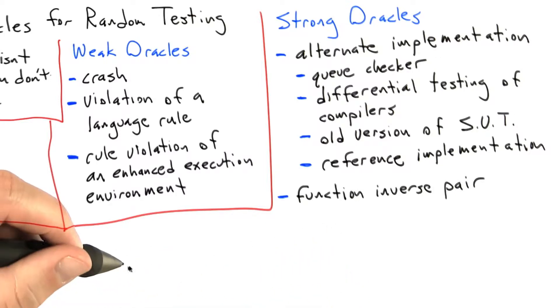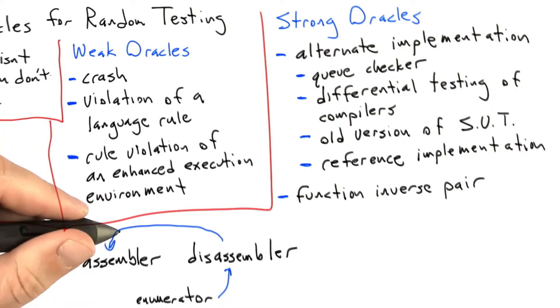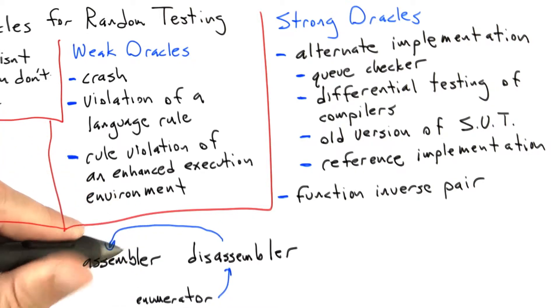If you remember a couple of units ago, I gave the example of where you could test an assembler by pairing it with a disassembler and also an exhaustive enumerator for instruction encodings. And then what we would do is take all valid instruction encodings, disassemble them into assembly language, reassemble the assembly language into machine code, and do a comparison on the output. So that's what I'm talking about when I mention function inverse pairs.